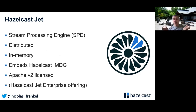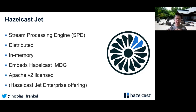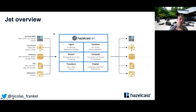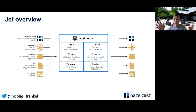Fortunately, we have Hazelcast JET. It's a stream processing engine, distributed, in-memory, and it embeds Hazelcast IMDG so it can leverage it. It's Apache 2 licensed, and we have an enterprise offering with monitoring, security, and all the nice stuff. JET is an in-memory stream processing engine — you can read from different sources, write to different sources, and do everything inside like enriching the stream. It's distributed by default, not only across cores on a single node but also over the network across multiple nodes.